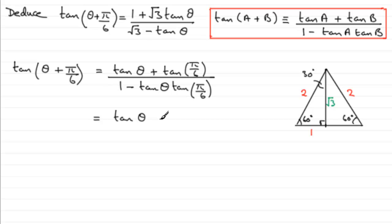So if we mark those in now, we've got tan theta plus 1 over root 3, and that's divided then by 1 minus tan theta multiplied by 1 over root 3.